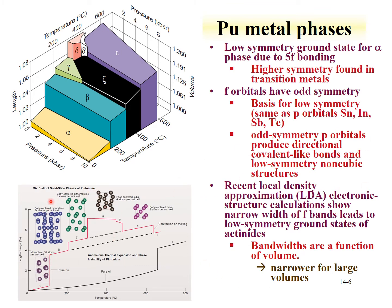Crystal structures go from lower to higher symmetry at higher temperatures. Compared to aluminum, which has just one phase that increases in length until its melting point where density decreases — a very simple system — plutonium is much more complicated, with different phases and the additional feature that the liquid is more dense than the highest-temperature solid phase.